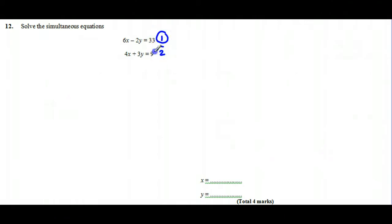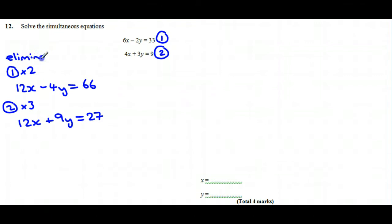If we wanted to cancel out the x's, it would make sense to multiply equation 1 or equation 2, or even both. It looks like 12x would be what we're aiming for. So for equation 1 times 2, you would get 12x minus 4y equals 66. Then you'd also have to do equation 2 times 3 to give you 12x plus 9y, and that will be equal to 27. That's to allow us to eliminate x.